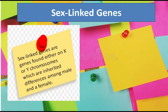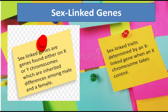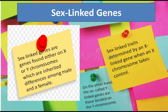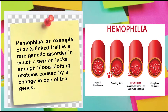Sex-linked genes are genes found either on X or Y chromosomes, which are inherited differences among male and female. Sex-linked traits are determined by an X-linked gene when an X chromosome takes control. On the other hand, Y-linked genes are those located on the Y chromosome. Hemophilia, an example of an X-linked trait, is a rare genetic disorder in which a person lacks enough blood clotting proteins, caused by a change in one of the genes.